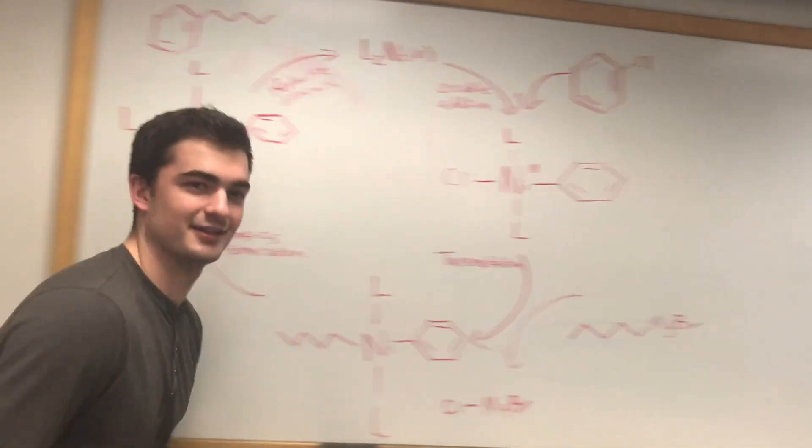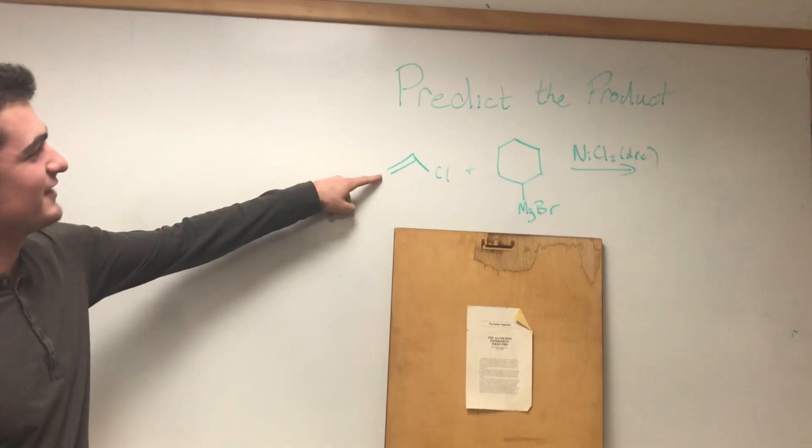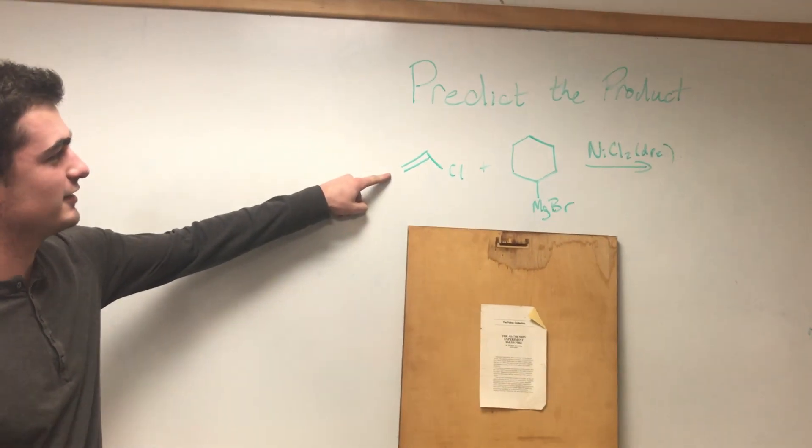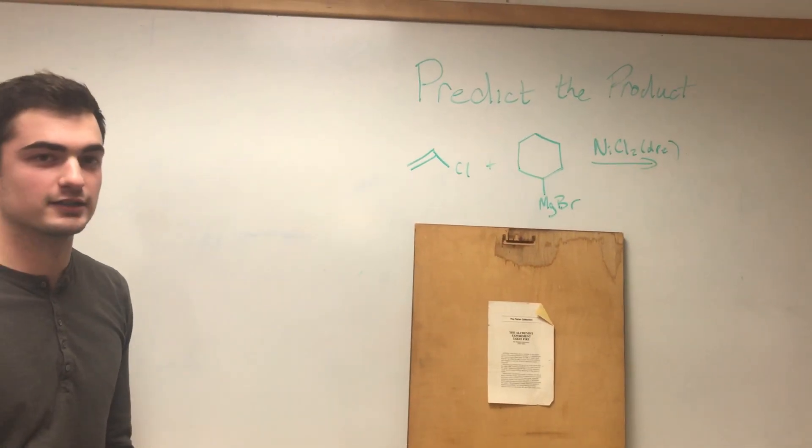Now let's take a look at a predict the product. Now that we're down here, predict the product. We've got our vinyl halide right here. We've got our Grignard and our nickel catalyst. So take a second to see if you can predict the product.